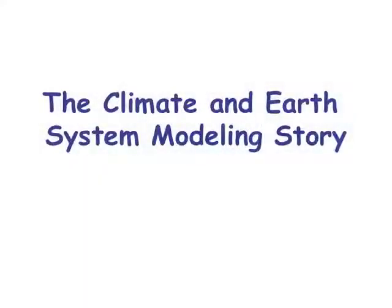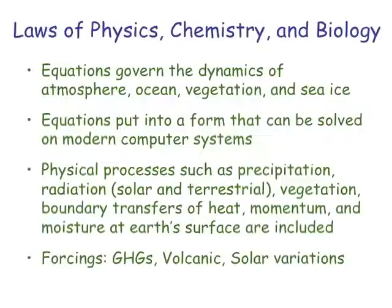Now I'm going to say something about climate modeling. The laws of physics and chemistry and biological processes can be expressed in terms of mathematical equations — probably most precisely for the physics and chemistry. Biology is a later addition to climate models. These equations, at least for the dynamics and thermodynamics of the atmosphere and oceans, we've known about for a long time. We have to express these in mathematical equations and then put them into a form solved by modern computer systems.